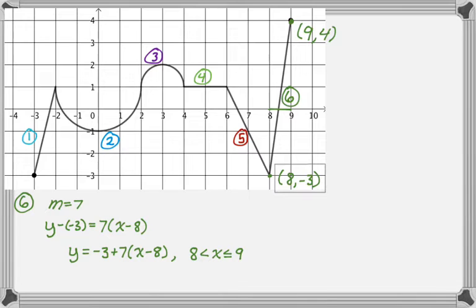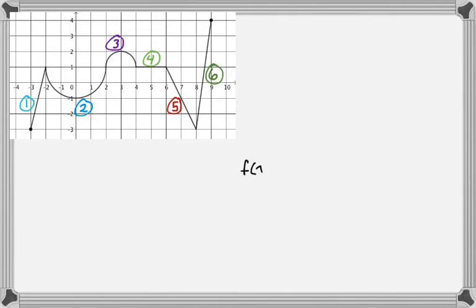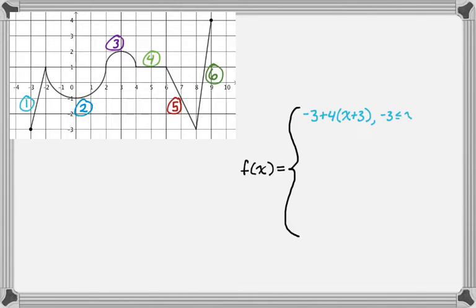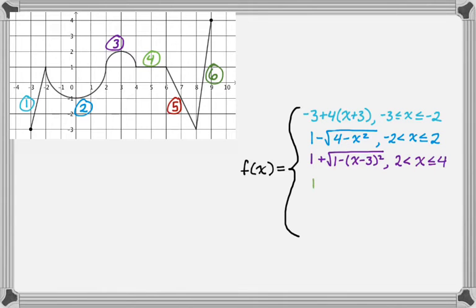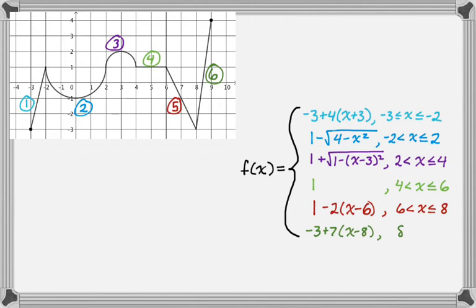The last thing to do is write the piecewise function, putting all six branches together with proper notation. f of x equals, followed by a large brace, and then we list the branches in order from left to right. The notation looks a little unusual the first time you see it, but it's not that bad once you get used to it. Each branch is listed with its equation and its corresponding interval.